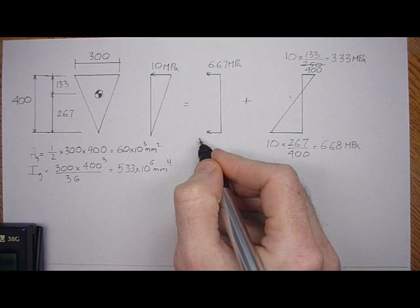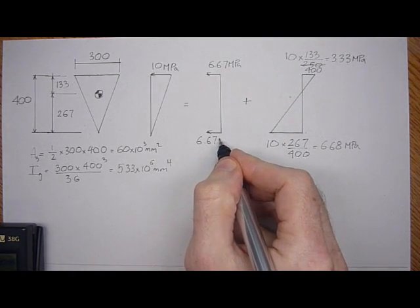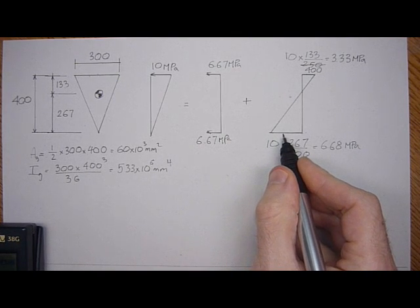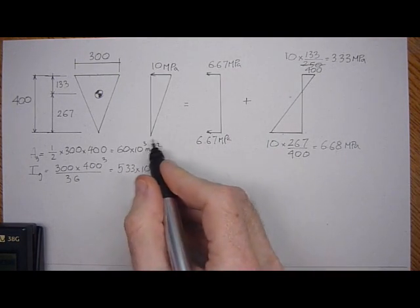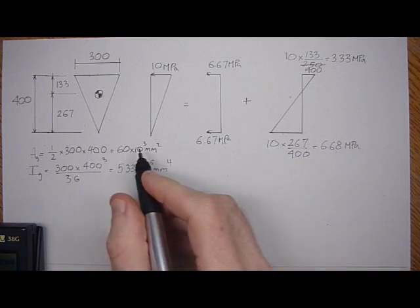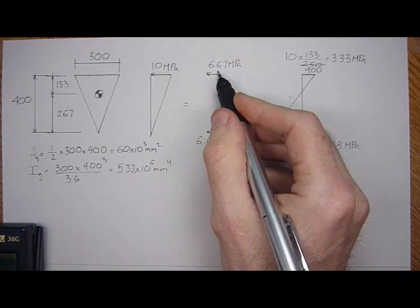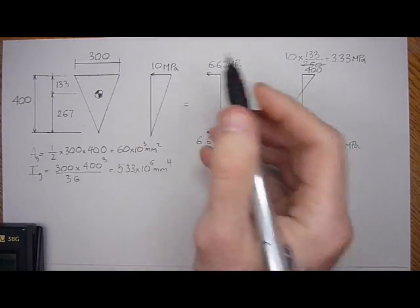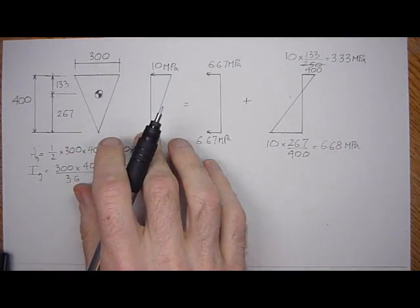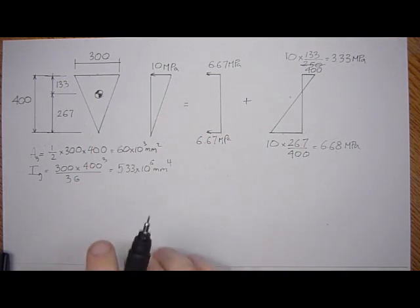Constant stress, so it has to be 6.67 here. This plus minus this has to equal 0, which is basically 6.67 plus minus 6.68 equals 0. So on the top, 6.67 plus 3.3 equals 10 MPa. Great. So we found the two stress distributions that superimpose to give us this stress gradient here.